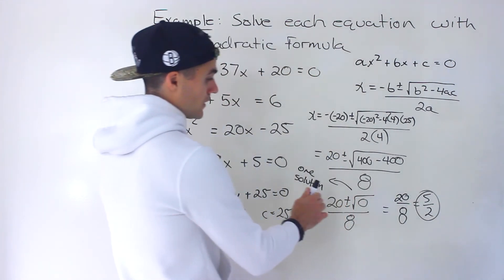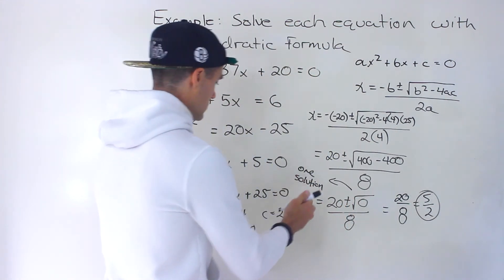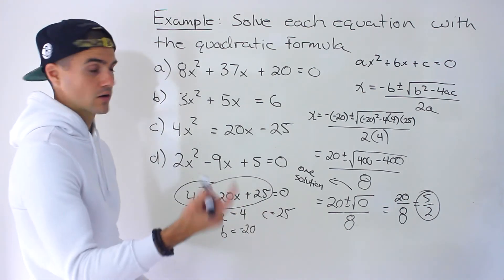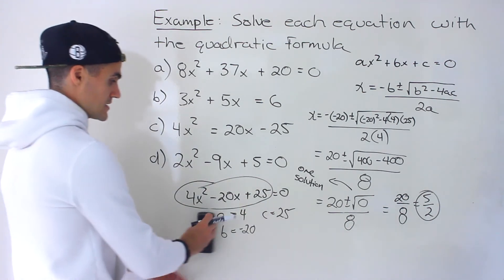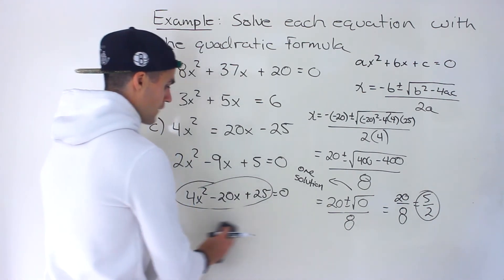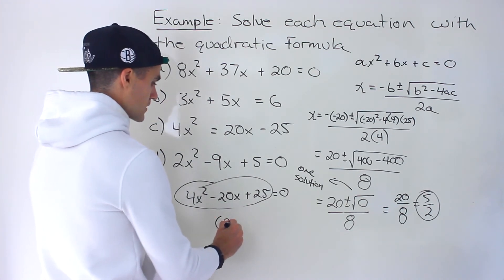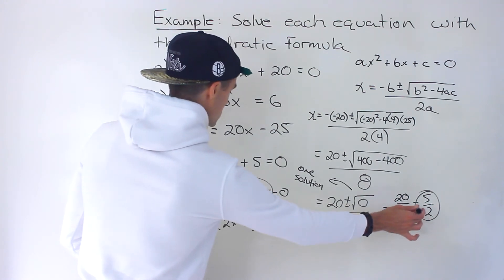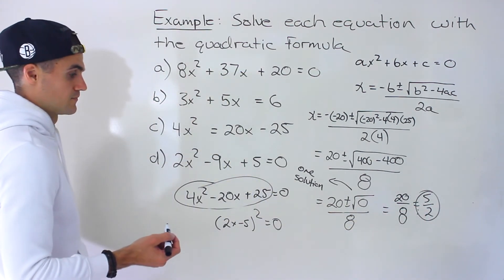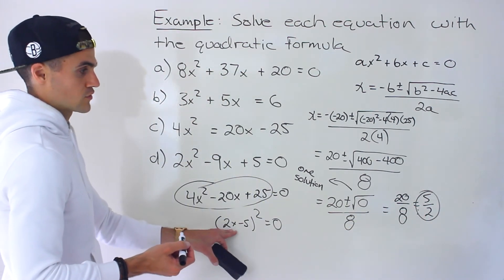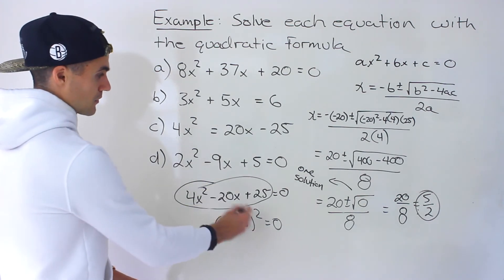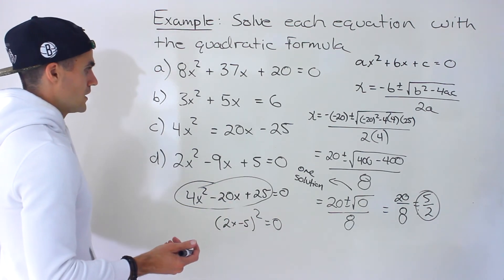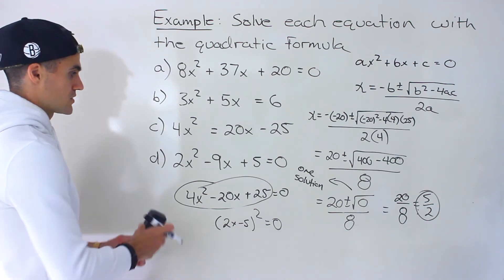What it means when there's only one solution is that the original equation was a perfect square trinomial. If you factored it, it would factor into (2x minus 5) squared. That's what one solution means, and that's where the 5 over 2 is coming from — it's coming from that factor. So that is part C.